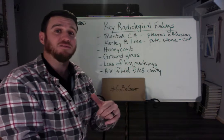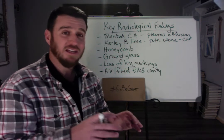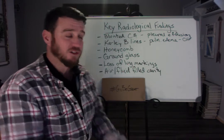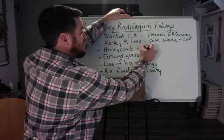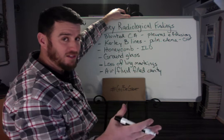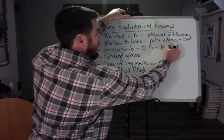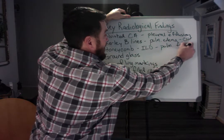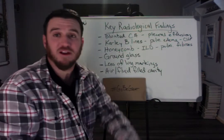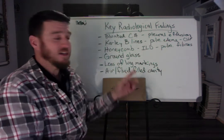Kerley B lines equals pulmonary edema; blunted costophrenic angles equals pleural effusion. Now the next one on here is honeycomb appearance. When you're looking at an x-ray and it describes the findings as a honeycomb appearance, then we're talking about interstitial lung diseases — and most of the time this is going to take us to the disease process of pulmonary fibrosis.